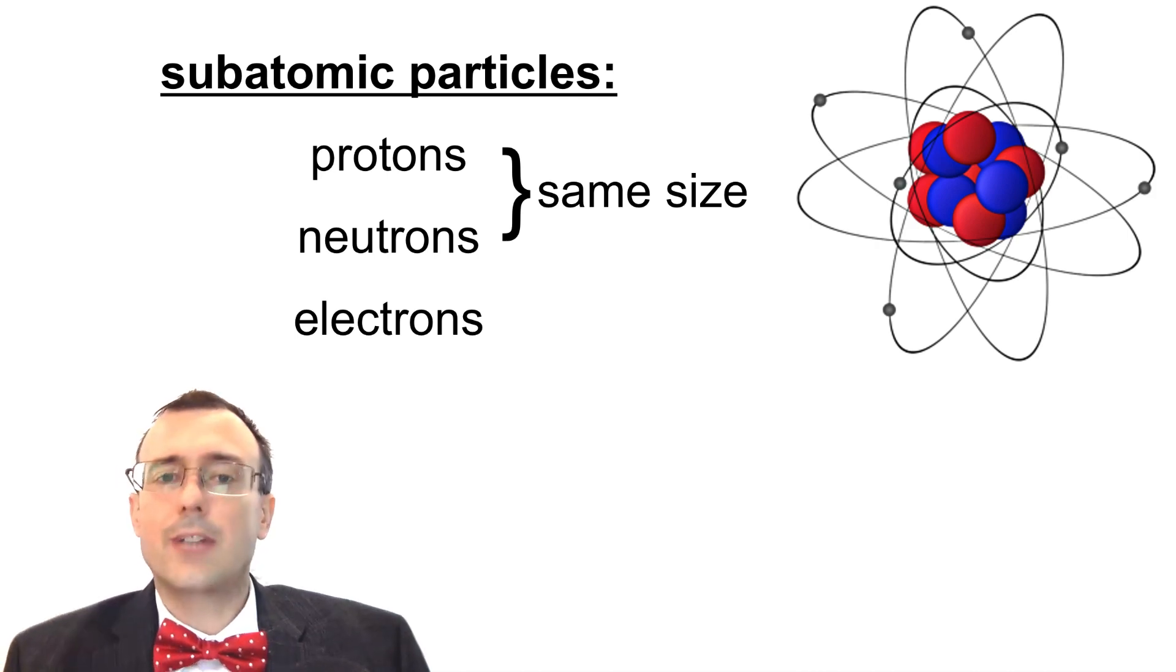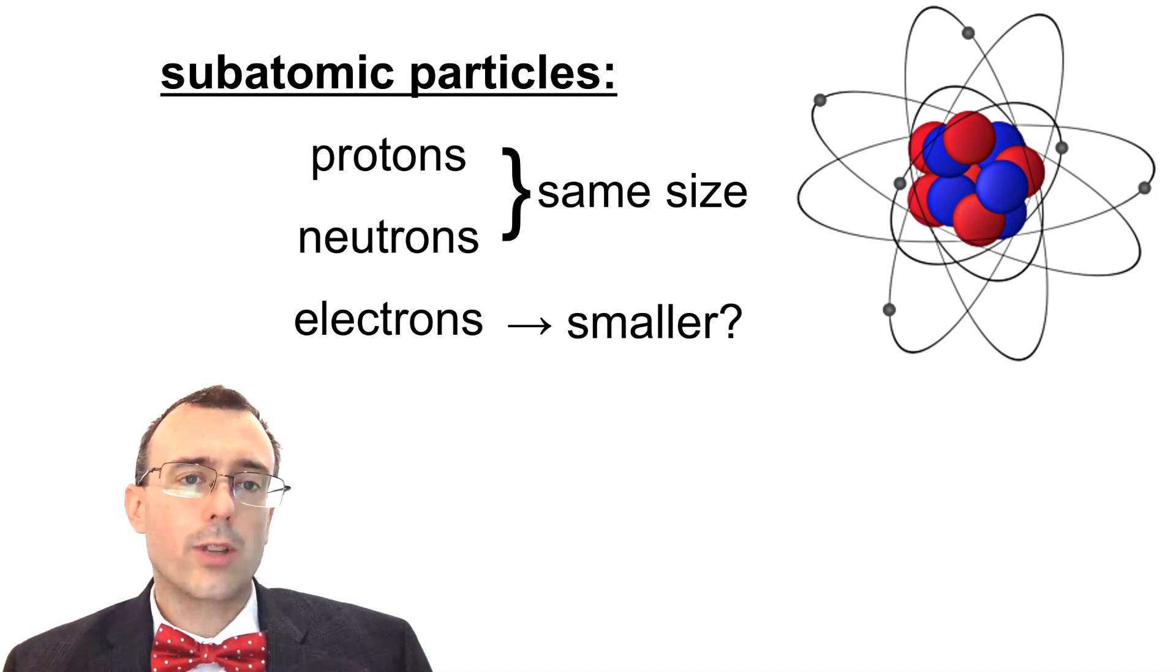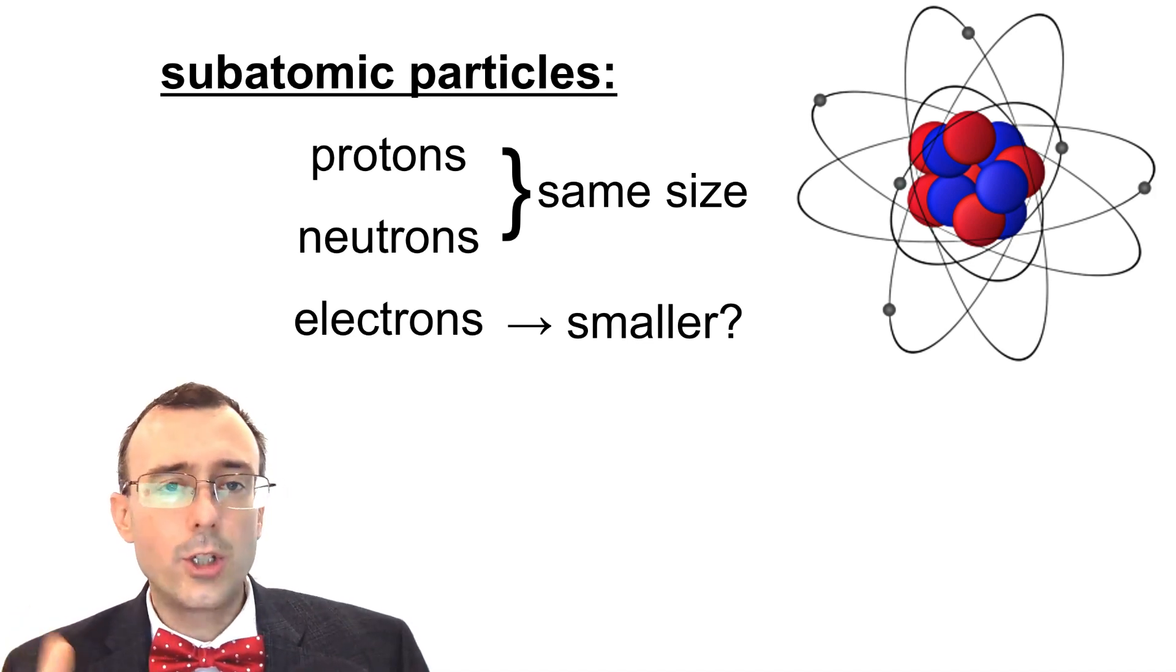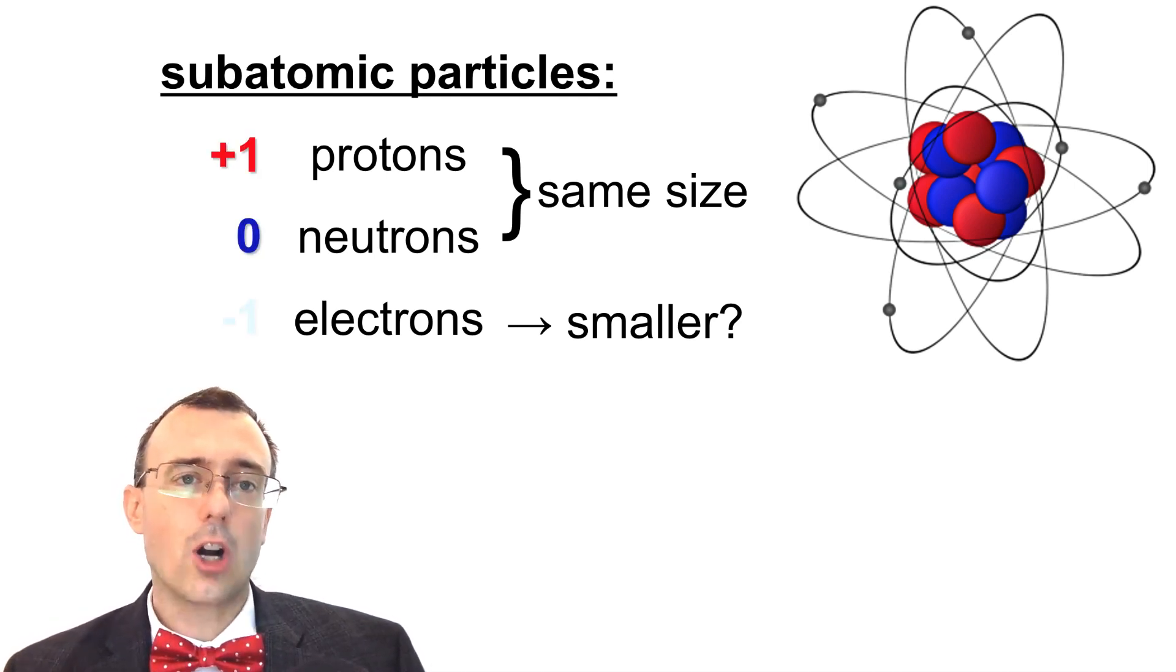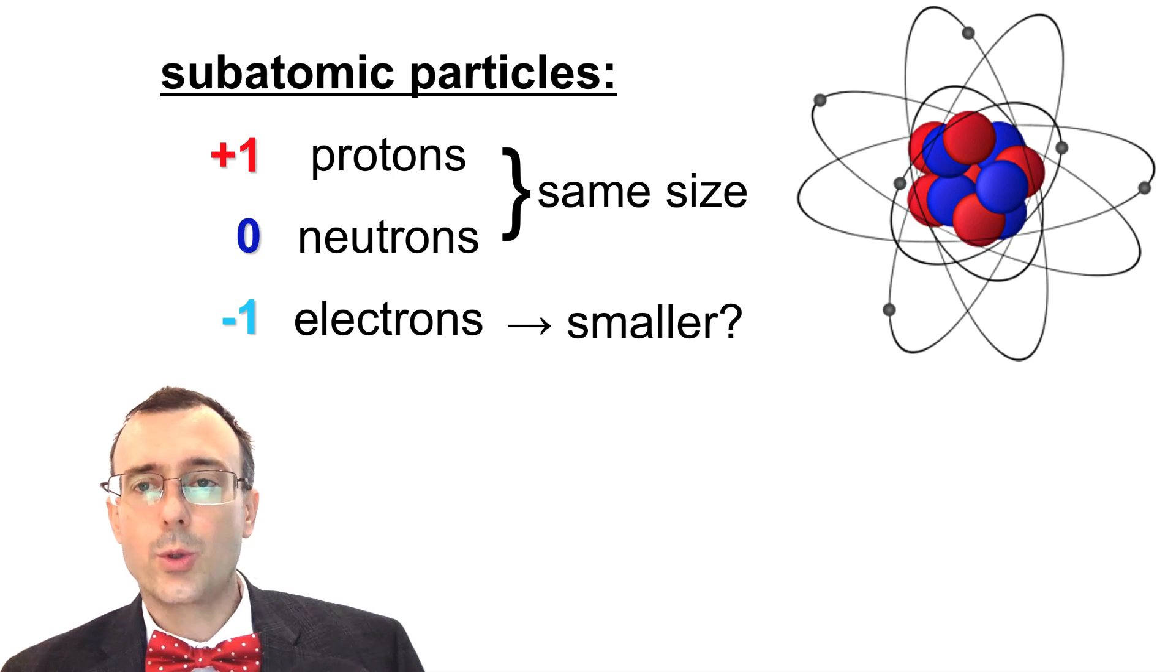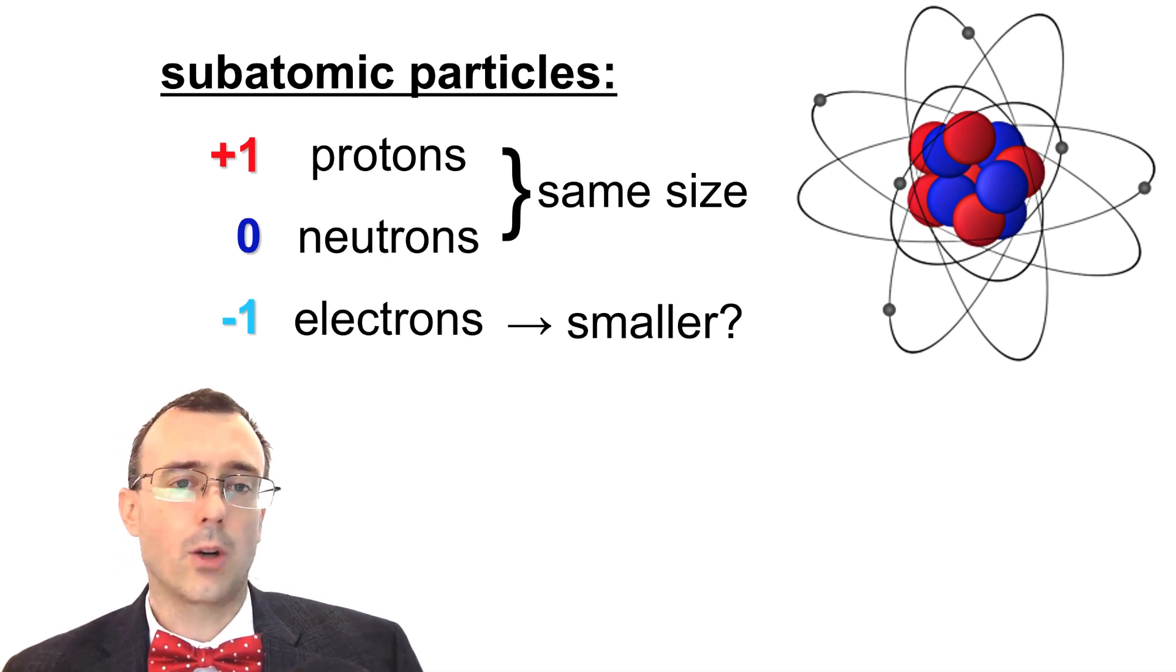Now, electrons—it turns out that electrons, we don't even know how big they are. We think that they're smaller than protons and neutrons, but we don't know the exact size. What we do know about protons, neutrons, and electrons is that protons have a charge of positive one, neutrons are neutral with a charge of zero, and electrons have a negative one charge.